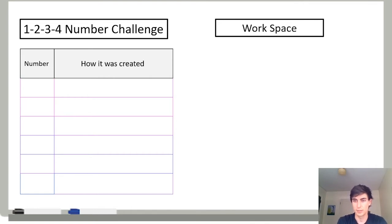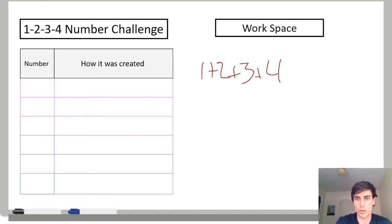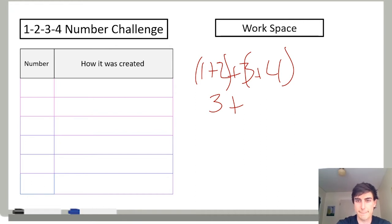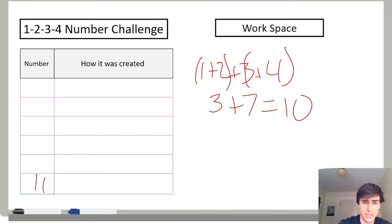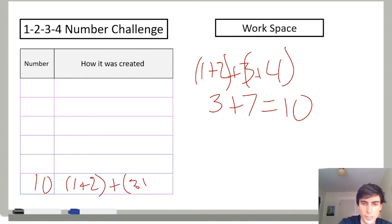I'm going to try out that first expression: one plus two plus three plus four. One plus two is three, three plus four is seven, three plus seven equals 10. I found the number 10. I'm going to put my expression that I used to find 10 in the 'how it was created' space: (one plus two) plus (three plus four). You can see me using those parentheses again — it says I did these first, I did these together.